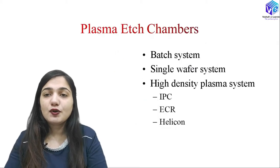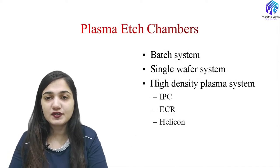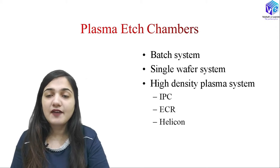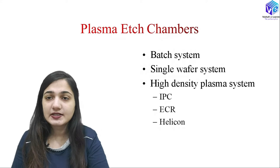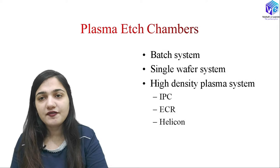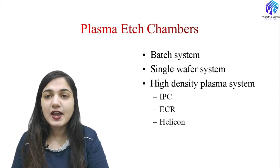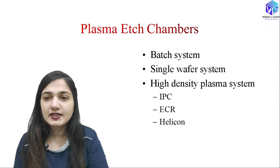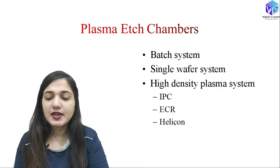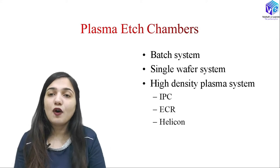Coming to the plasma etch chambers, we have two types of classifications: the batch system and the single wafer system. In the batch system, multiple ICs are processed simultaneously. In the single wafer system, only a single wafer is processed at a time. We also have the high density plasma system, which can be divided into three parts: the helicon system, the ECR (electron cyclotron resonance) system, and the ICP (inductively coupled plasma) system.